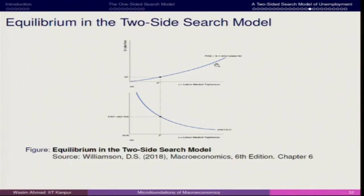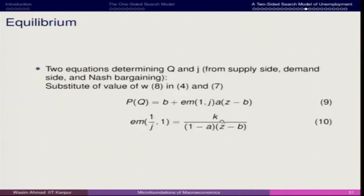We can see that the labour market tightness we derived is G (J), and the corresponding labour force participation is Q. We will also do comparative statics: what happens if K increases, what happens if B increases, and what will happen if there is a productivity increase in Z.